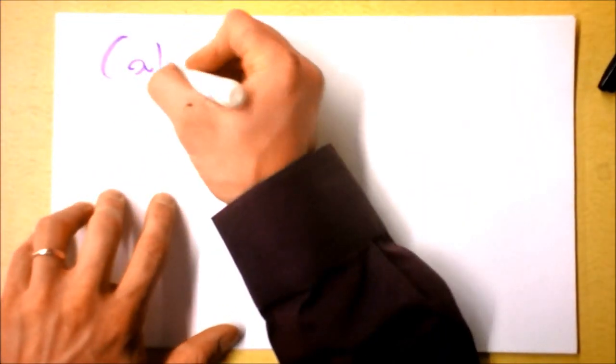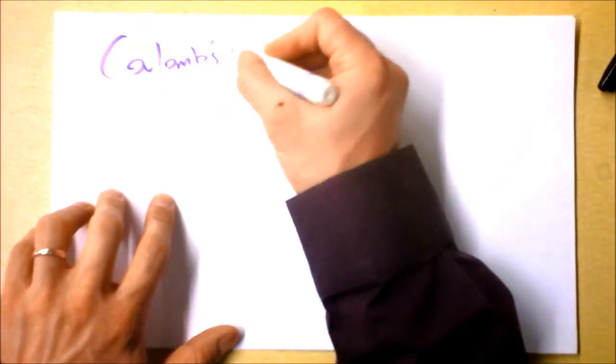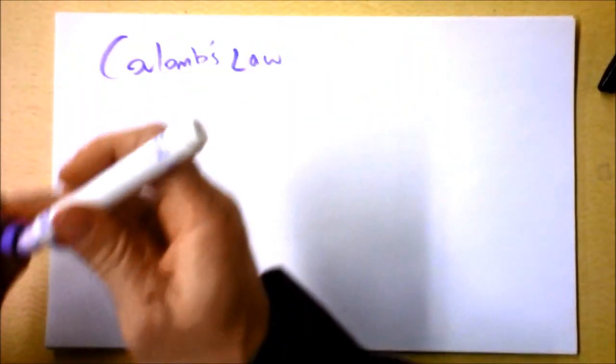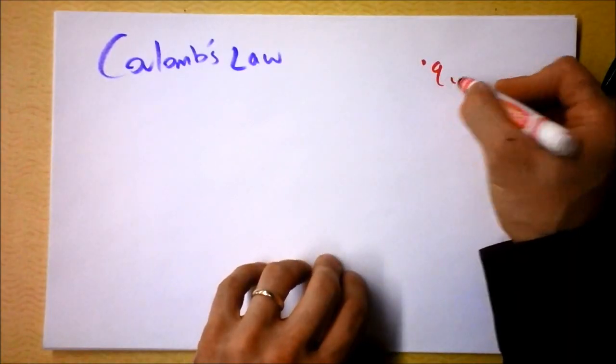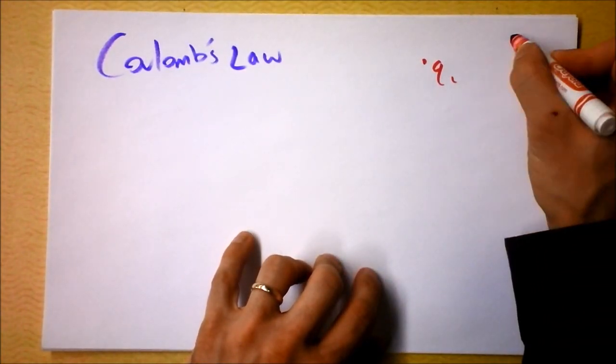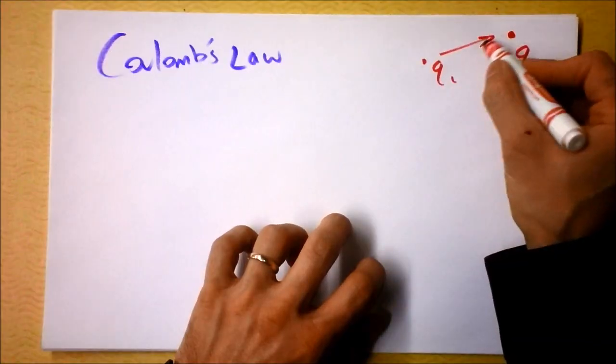Coulomb's Law. You got the force between two charges. Let's say you got a charge right here, this sucker's Q1, and you got a charge right here, and this sucker's Q2, and they're separated by some distance.